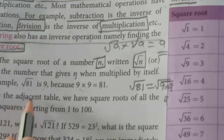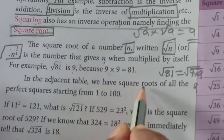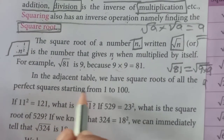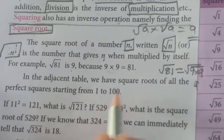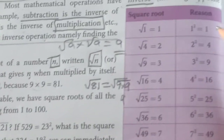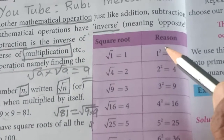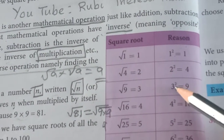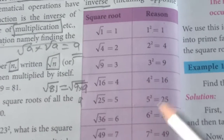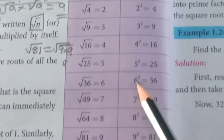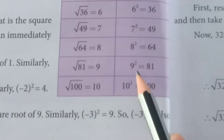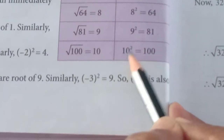In the adjacent table, we have square roots of all the perfect squares starting from 1 to 100. One squared is 1 into 1 — 1. Two twos are 4. Three threes are 9. Four fours are 16. Five fives are 25. Six sixes are 36. Seven sevens are 49. Eight eights are 64. Nine nines are 81. Ten tens are 100. You should be able to say it out.